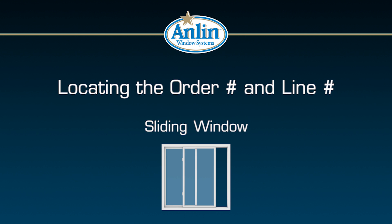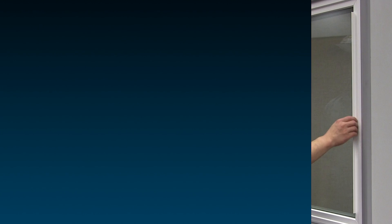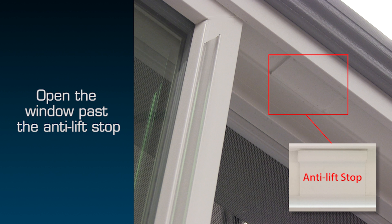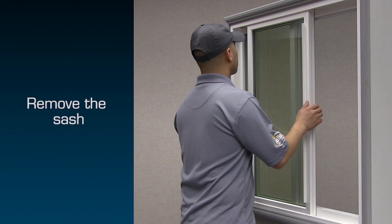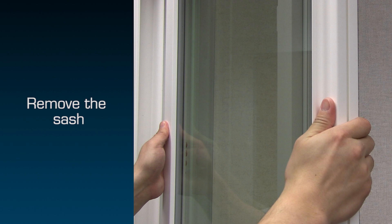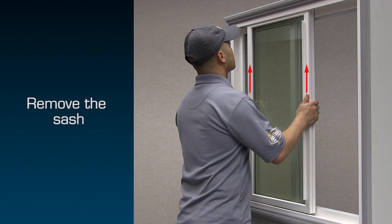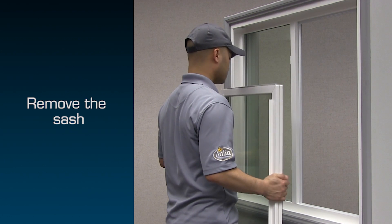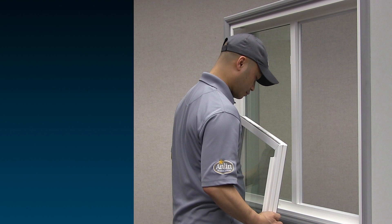When finding the order and line number on a sliding window, slide the sash open past the anti-lift stop located in the top of the window frame. Carefully secure both sides of the sash with your hands. Lift the sash directly upward into the top of the window frame and pull the bottom of the sash out toward you. Locate the label on top of the sash.